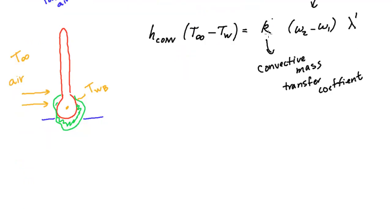What I'm going to do is move this K to the other side of the equation. So h convective over K, this is mass transfer coefficient, and T infinity minus T of the wet bulb is equal to...